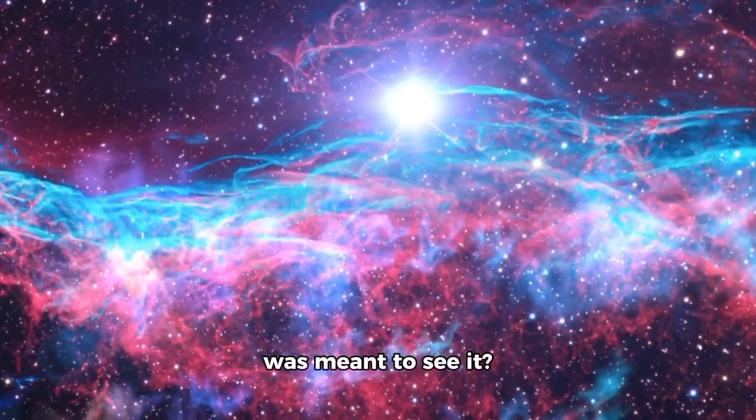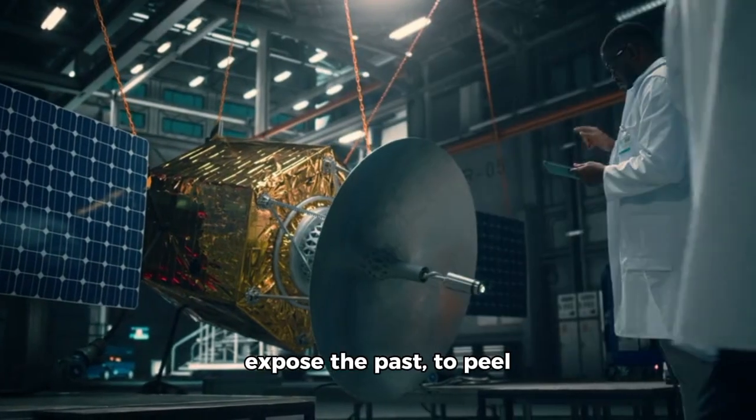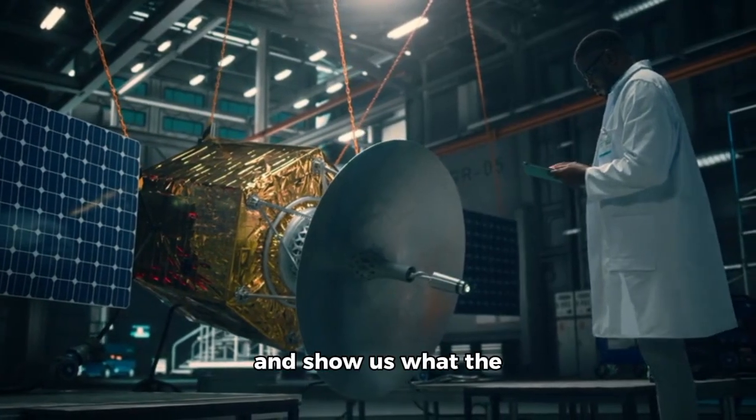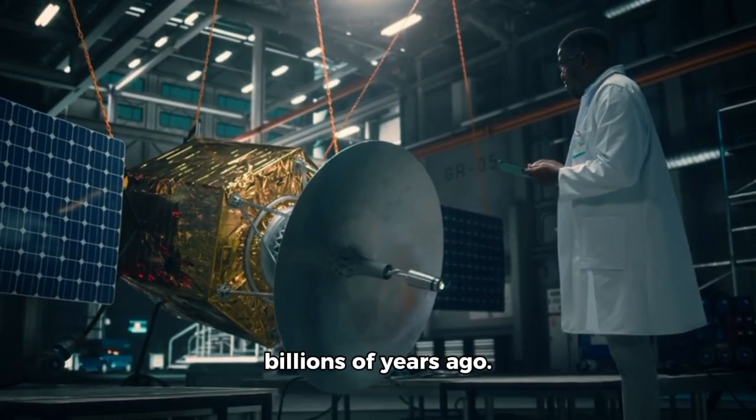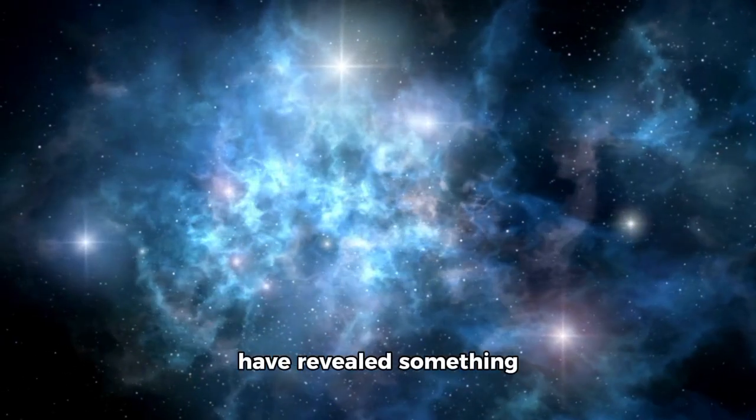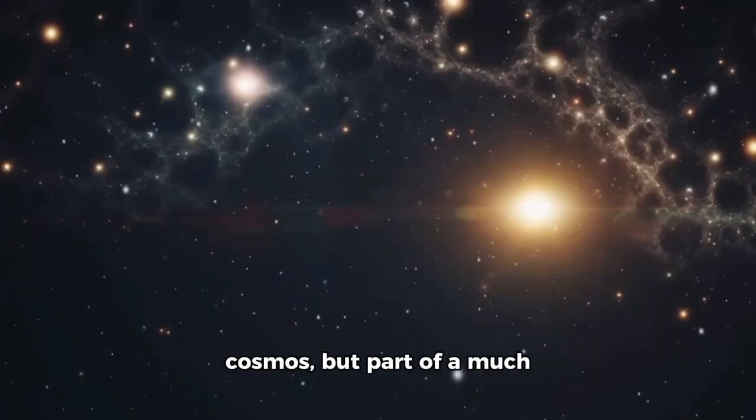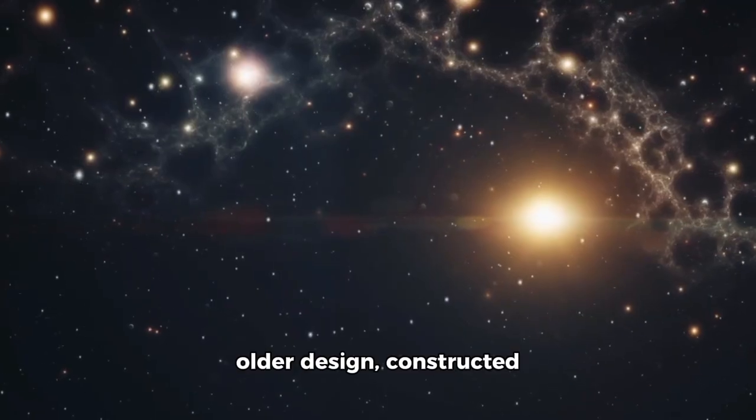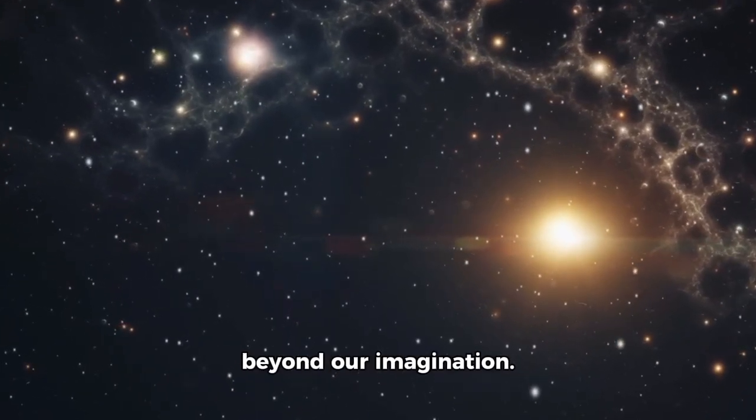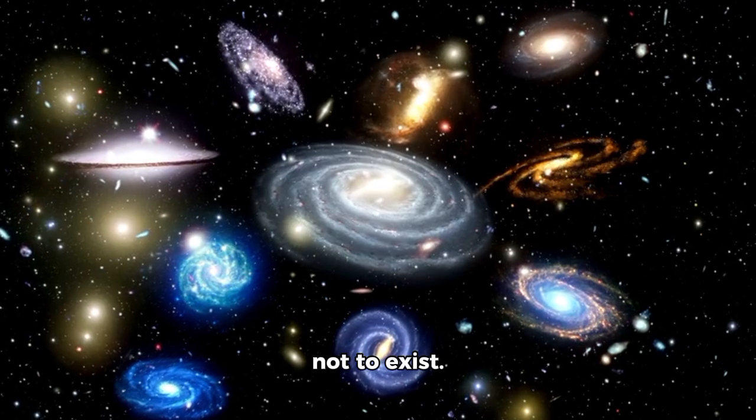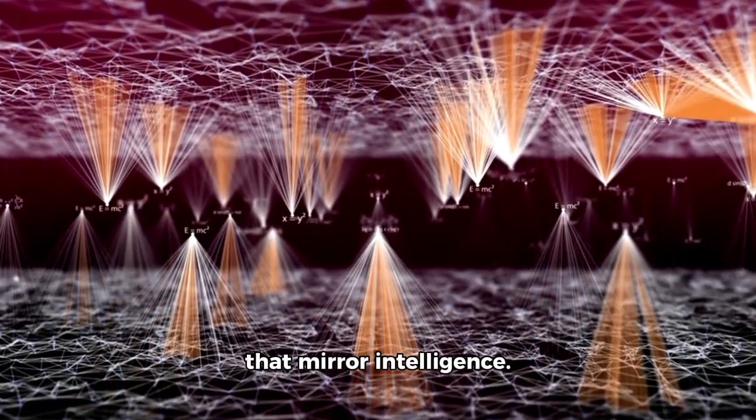The James Webb Space Telescope was built to expose the past, to peel back the layers of time and show us what the universe looked like billions of years ago. But in doing so, it may have revealed something even deeper: that we are not just observers of the cosmos, but part of a much older design, constructed with precision and care beyond our imagination. Galaxies that ought not to exist, planets defying gravity, signals and structures that mirror intelligence.